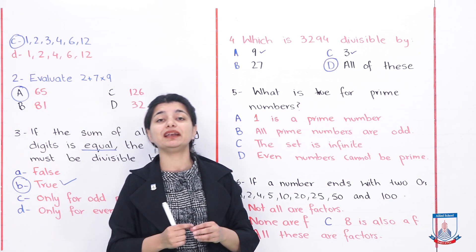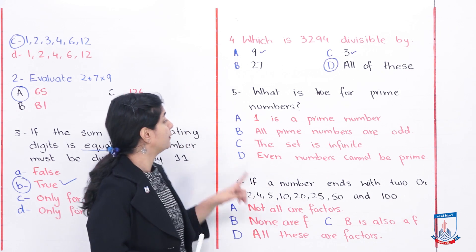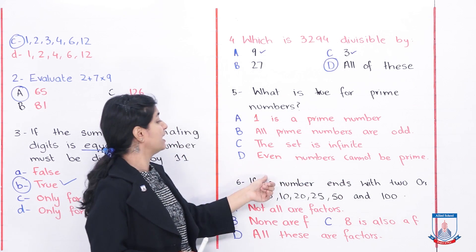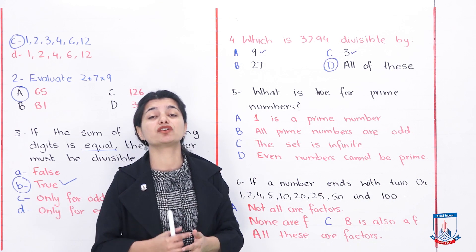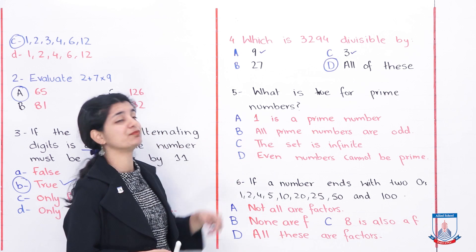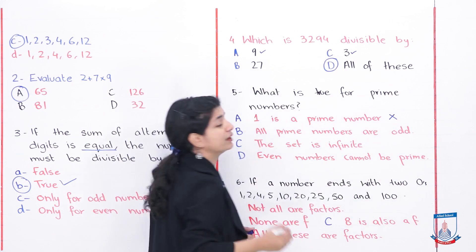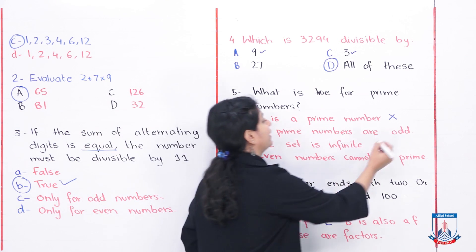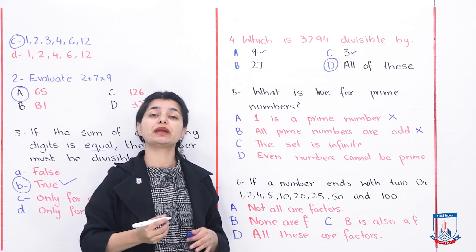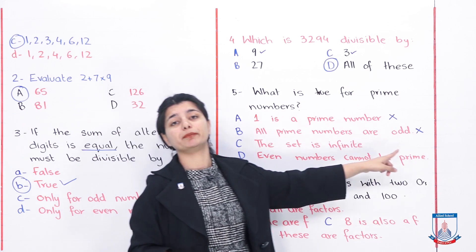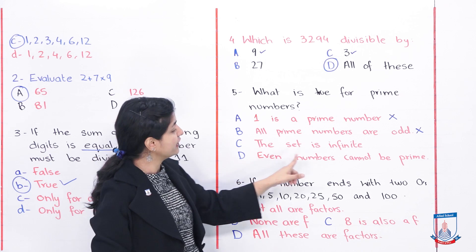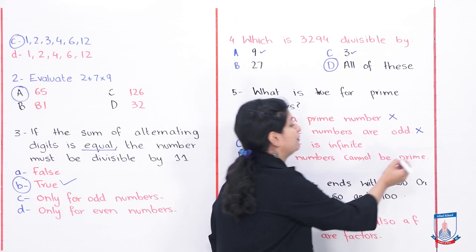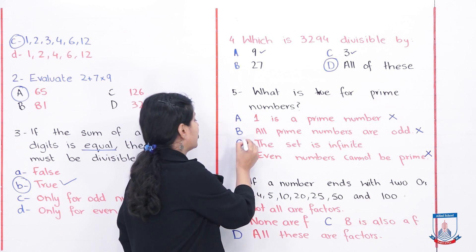The next MCQ: which statement is true for a set of prime numbers? The options are: 1 is a prime number — this is completely false. All prime numbers are odd — also false, because 2 is a prime number and 2 is even, so not all prime numbers are odd. Even numbers cannot be prime — also false, because 2 is an even prime number. Therefore, the correct statement is that the set of prime numbers is infinite.